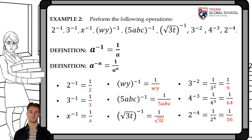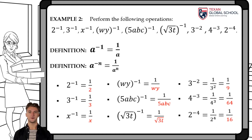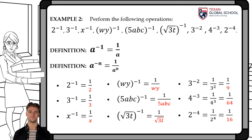3 to the negative 2 equals 1 over 3 squared, or one-ninth. 4 to the negative 3 equals 1 over 4 cubed, or one-sixty-fourth. Finally, 2 raised to the negative 4 is equal to 1 over 2 raised to the fourth power, or one-sixteenth. It is important to emphasize that the laws apply only to exponents. No alteration appears to the signs of the coefficients.